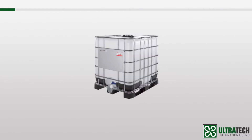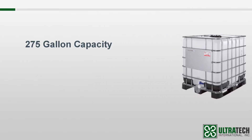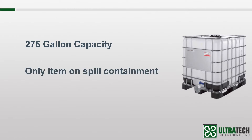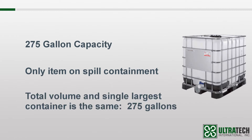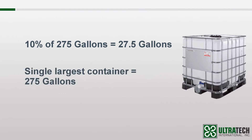One last scenario and then we'll move on. Let's say that you've got an IBC, or intermediate bulk container, that you need spill containment for. Now these tanks come in quite a few shapes and sizes, but for this example we'll go with one of these, which holds 275 gallons. It's going to be the only thing on the spill containment unit, so the total volume of the containers and the single largest container will be the same — 275 gallons. 10% of 275 gallons is 27.5, which is of course much less than 275, so this scenario requires at least 275 gallons to be in compliance.